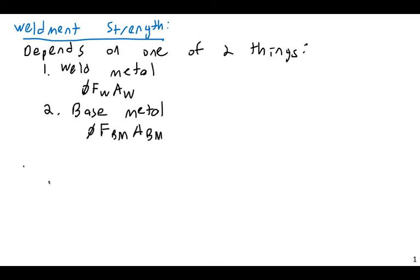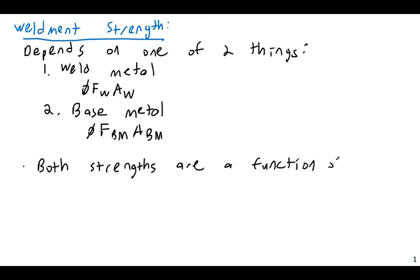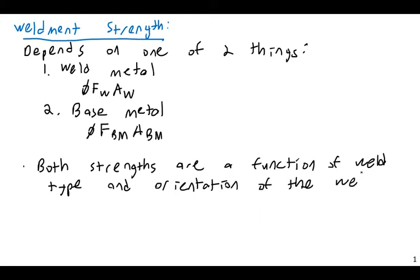Both of these strengths are a function of the weld type and the orientation of the weld. Our guide for this is going to be Table J2.5, which in the AISC 15th edition is on page 16.1-123.